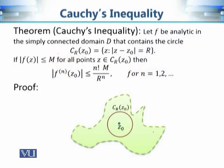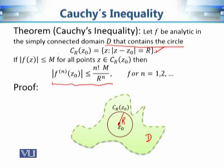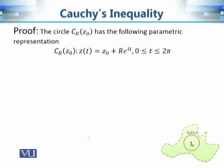Now let's talk about the proof of Cauchy's inequality. We have this analytic function in the simply connected domain D, and there is a circle contained in that domain D. If the center is z₀ and radius is r, then we have the following upper bound on any order derivative at point z₀, which is n! · M over r raised to power n. We want to find the upper bound of this nth derivative at point z₀.